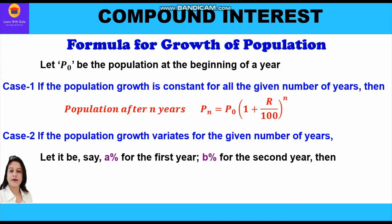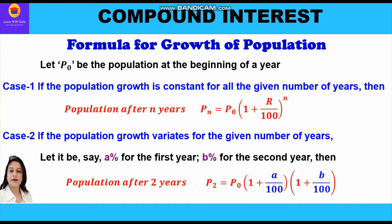In case two, the population growth varies for the given number of years. Let it be a percent for the first year and b percent for the second year. Then the population after two years is: P2 = P0 × (1 + a/100) × (1 + b/100). For the first year it was a percent growth and the second year b percent growth.